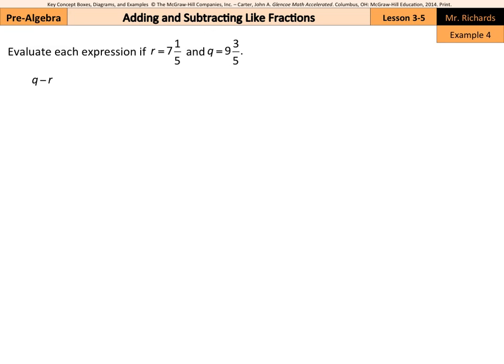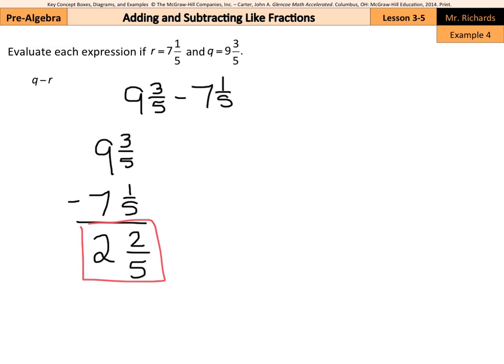Evaluate each expression of r equals 7 and 1 fifth, and q equals 9 and 3 fifths. Well, substitute in, q is 9 and 3 fifths minus our r of 7 and 1 fifth. Now, I prefer to write these vertically, 9 and 3 fifths minus 7 and 1 fifth. So can I take 3 fifths minus 1 fifth? Yes. 3 minus 1 is 2 fifths, and 9 minus 7 is 2. So 2 and 2 fifths is my answer.